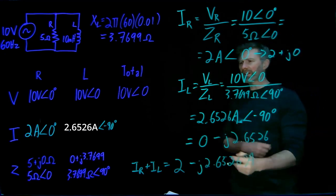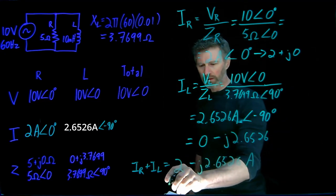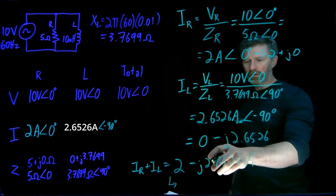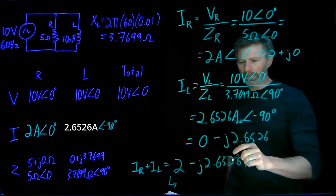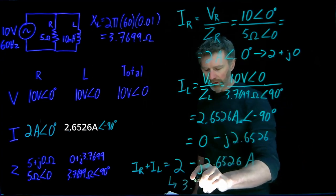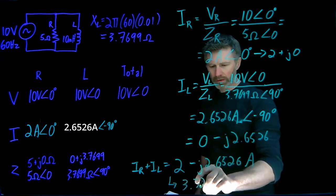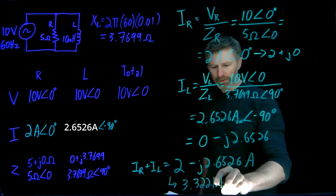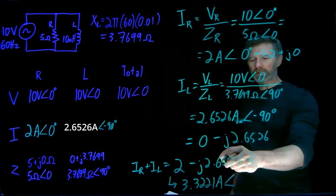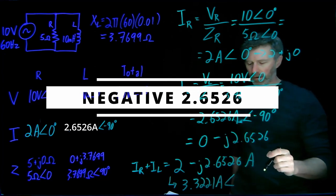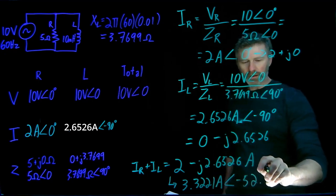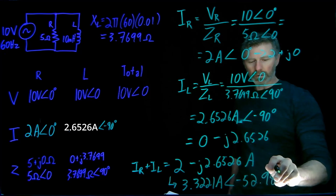Now I'm going to convert this into polar coordinates. To do that conversion, I take the square root of 2 squared plus 2.6526 squared, which gives me 3.3221 amps. To get the phase angle, I take the arctan of 2.6526 over 2, which gives me minus 52.984 degrees.